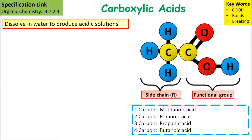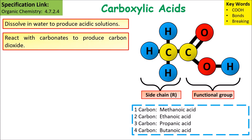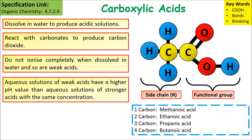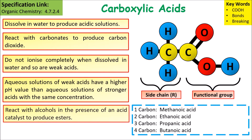Looking at their properties: carboxylic acids dissolve in water to produce acidic solutions, they react with carbonates to produce carbon dioxide, and they do not ionize completely when dissolved in water, making them weak acids. Aqueous solutions of weak acids have a higher pH value than aqueous solutions of strong acids at the same concentration.